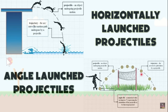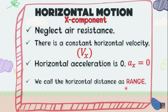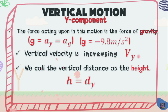In horizontal motion or the x-component, it neglects air resistance. There is a constant horizontal velocity, written as v sub x, and horizontal acceleration is 0, or a sub x equals 0. We call the horizontal distance the range. For vertical motion or the y-component, the force acting upon this motion is the force of gravity, or the acceleration due to gravity, g equals negative 9.8 meters per second squared. The vertical velocity is increasing, written as v sub y. We call the vertical distance the height, or h equals d sub y.